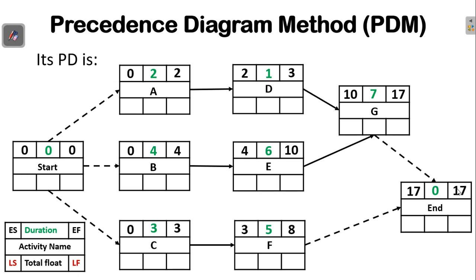Now we compute the late finish and late start times using the backward method. The early finish of the end activity becomes the late finish time, so we have 17. The late start time is late finish minus duration, giving 17. The total float is the difference between late finish and early finish, or late start and early start — which is zero at this end node.